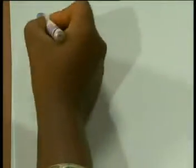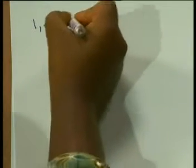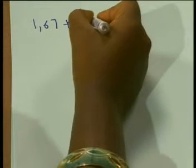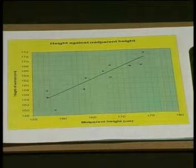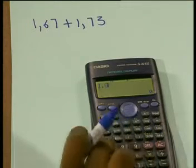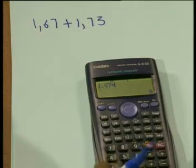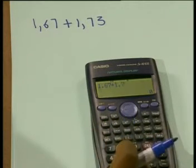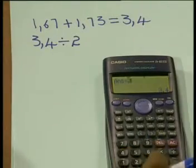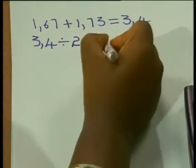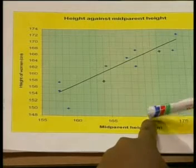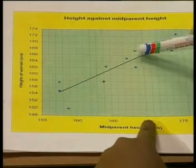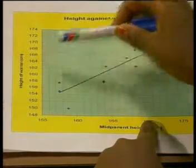For example, if Mrs. Mabena's height is 1.67 metres and Mr. Mabena's height is 1.73 metres, we can use the graph to predict how tall their daughter Pindi will be as an adult. We work out the mid-parent height: 1.67 plus 1.73 divided by 2 equals 3.4 divided by 2, which is 1.7. Using the trend line, we find 1.7 on the x-axis, move up to the line, and predict that their daughter's height will be 1.66 metres.